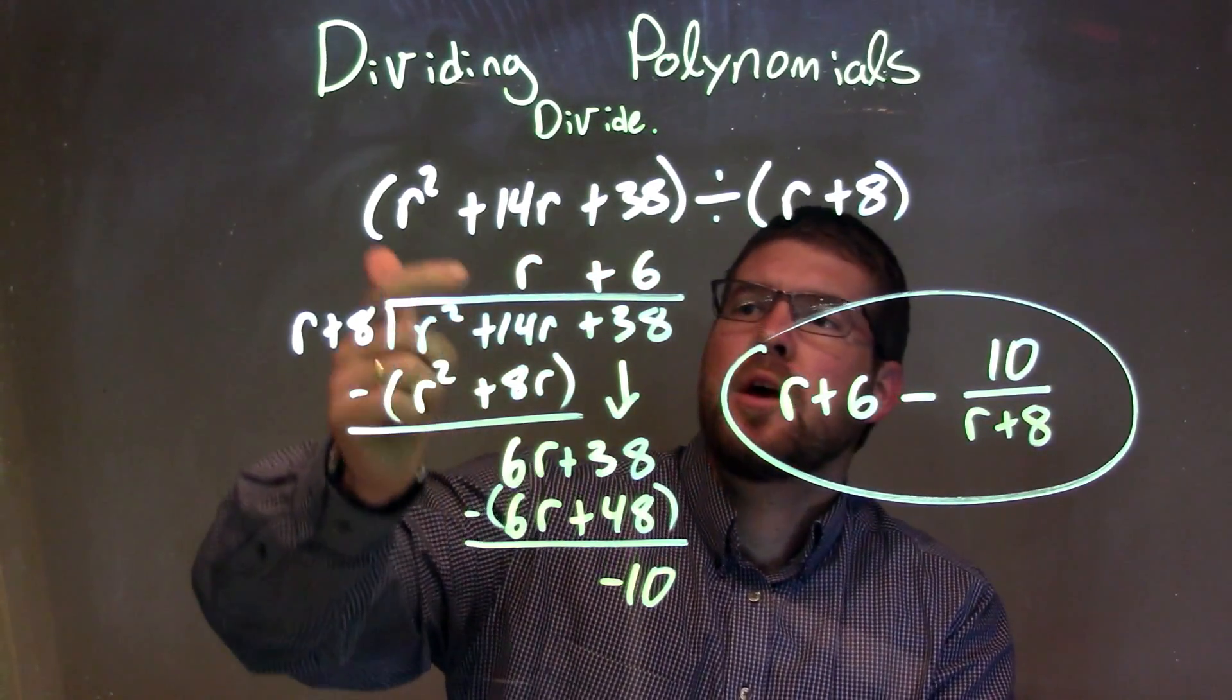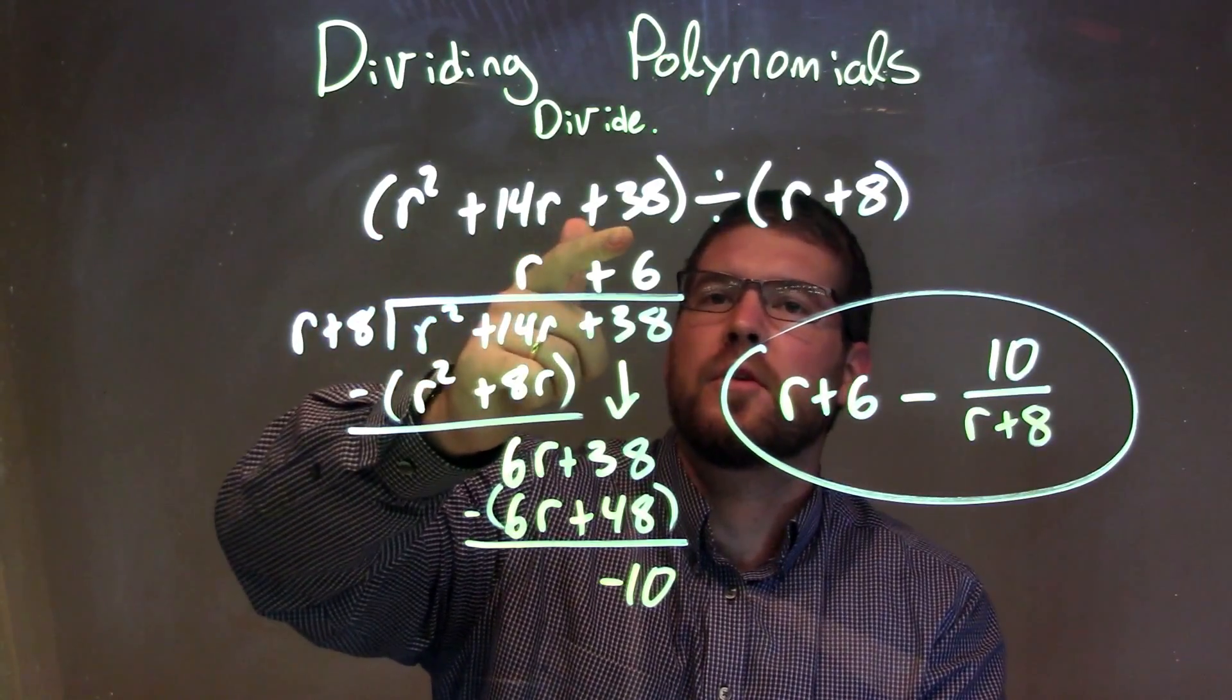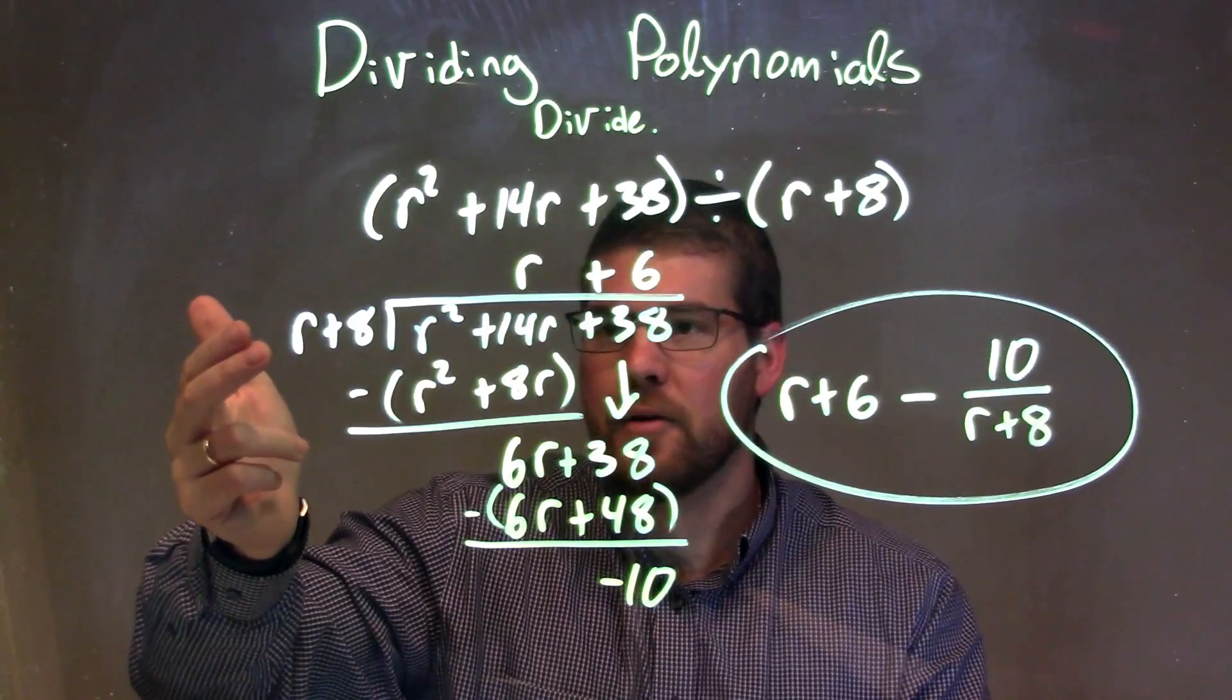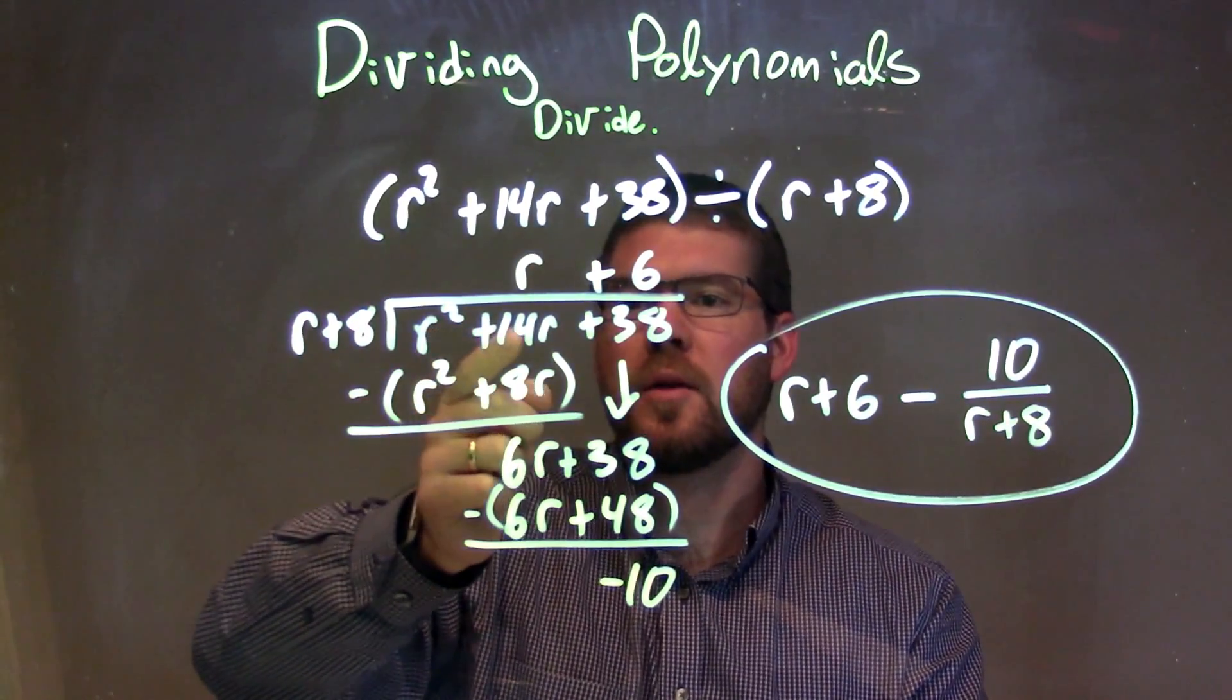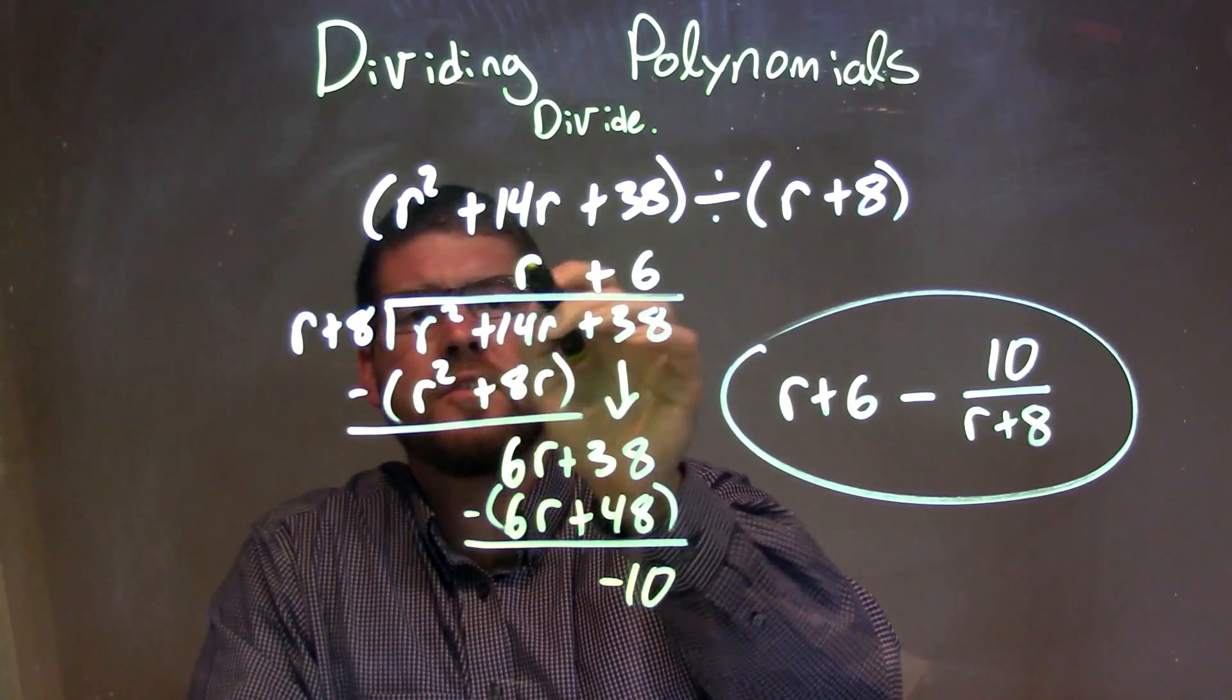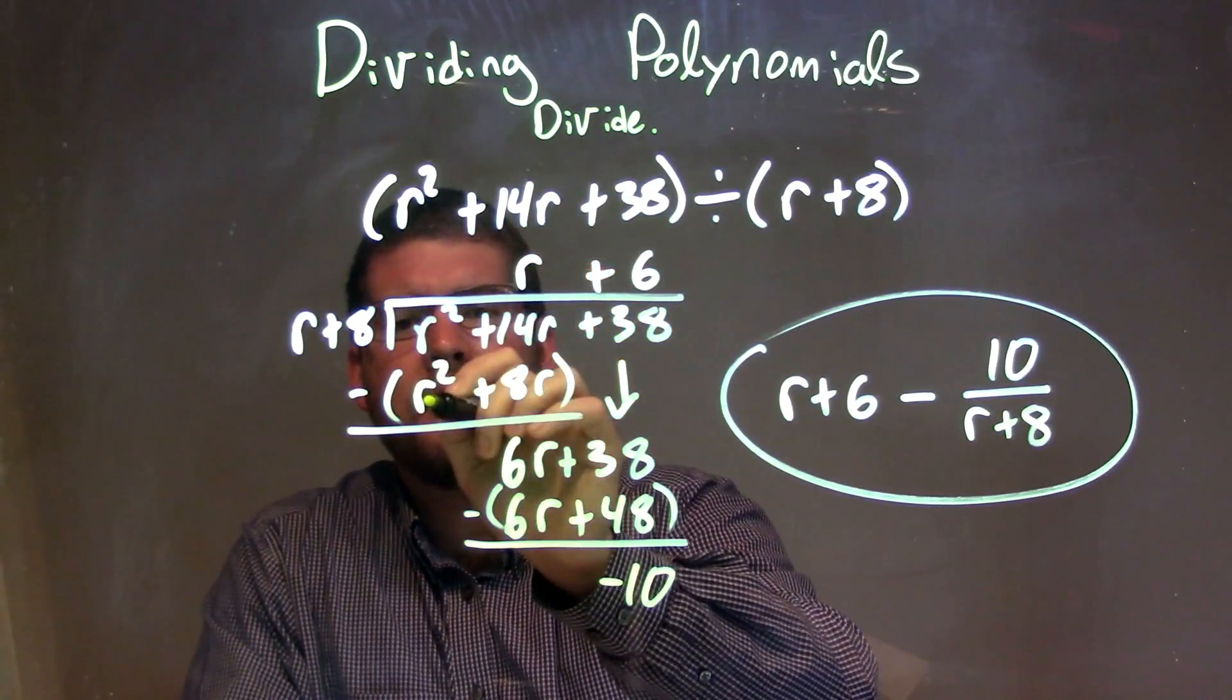So let's recap. We're given r squared plus 14r plus 38 divided by r plus 8. Well, we rewrite it here with our long division. r plus 8 goes into r squared plus 14r plus 38. What times r gives me r squared? That's r. So we multiply that right there, and then r times 8 is 8r.